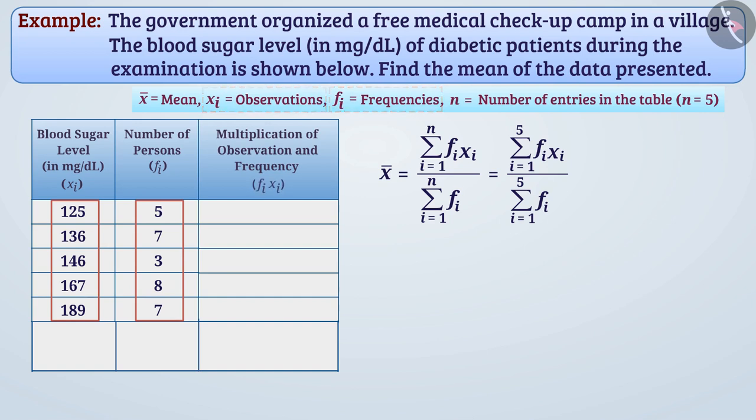Here the sum of the frequency of observations is 30, which means that a total of 30 diabetic patients were tested for blood sugar level. Now for each observation we will find f_i X_i, means f_i multiplied by X_i.